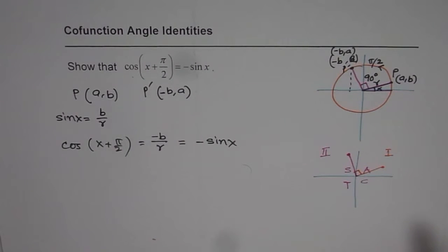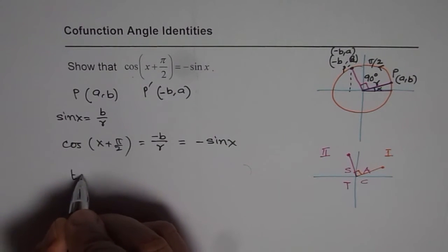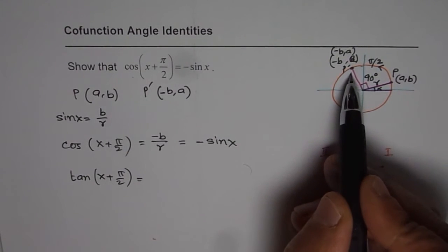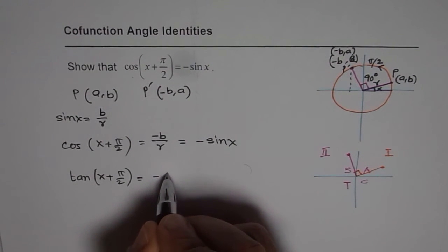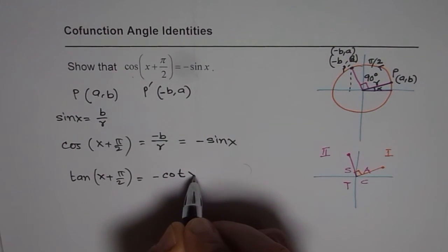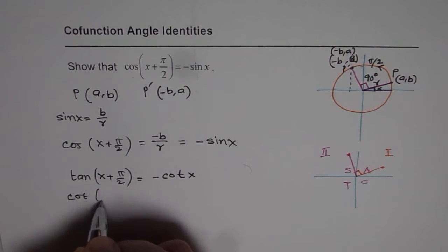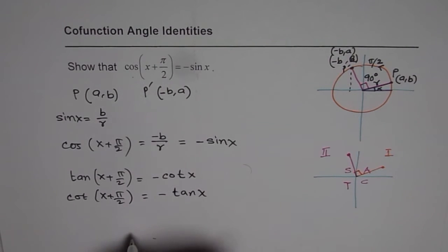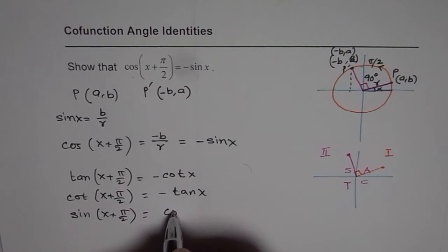I hope you understand and appreciate it. So in general, we can actually prove using this method that tan x plus pi by 2, since tan is also negative here, will be minus cot x. And cot x plus pi by 2 will be minus tan x. But if you take sine x plus pi by 2, then since sine is positive here, it is going to be equal to cos of x.